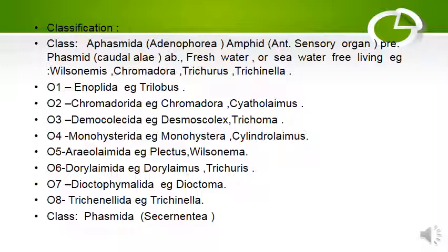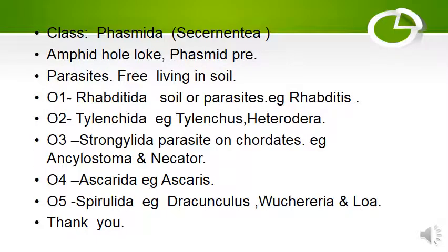The next class is Phasmida. Class 2 is Phasmida, in which the amphid is hole-like and phasmid is present. These include parasites and free-living forms in soil. Order 1 is Rhabditida — soil-living or parasitic; Rhabditis is the example.